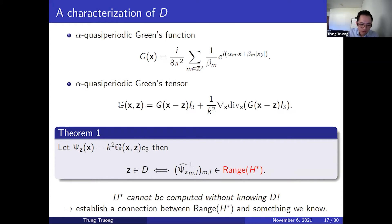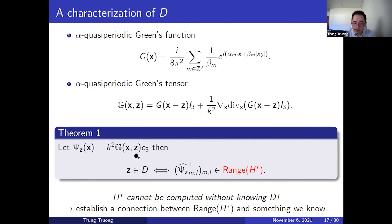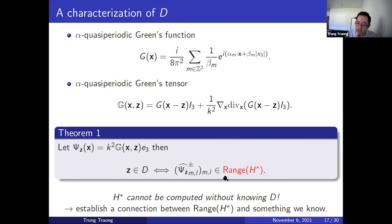First, we prove a characterization of the domain D — the structure we are trying to reconstruct — stated in Theorem 1. We know the Green's function for this problem is G, and we define the corresponding Green's tensor. If a function Phi is given by this definition, where e3 is just (0, 0, 1), then we have the following characterization of D: a point Z belongs to D if and only if the Rayleigh sequences of this function belong to the range of S-star. This is a very nice if-and-only-if condition. However, it is not complete because we cannot know the range of S-star without knowing D, which is the unknown we are trying to reconstruct.